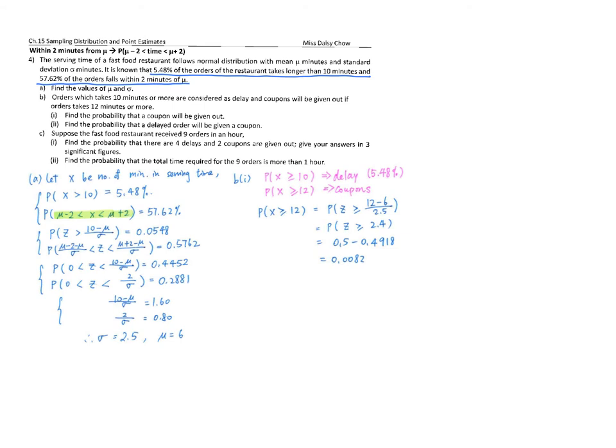B2: Find the probability that a delayed order will get a coupon. This means given that I already know it's a delayed order, what's the probability of getting a coupon? I already know the value is greater than or equal to 10, and I want to know the probability of being greater than or equal to 12.